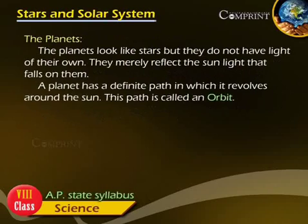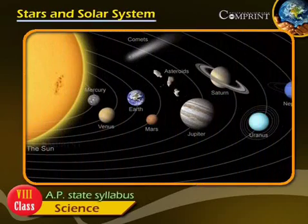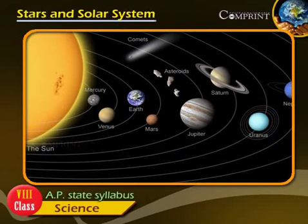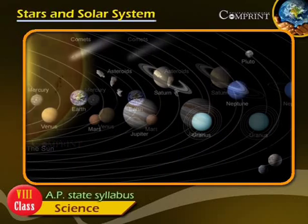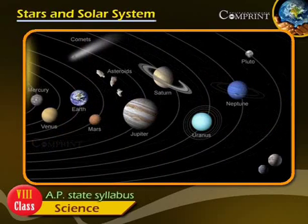The Planets. The planets look like stars but they do not have light of their own. They merely reflect the sunlight that falls on them. A planet has a definite path in which it revolves around the Sun. This path is called an orbit.